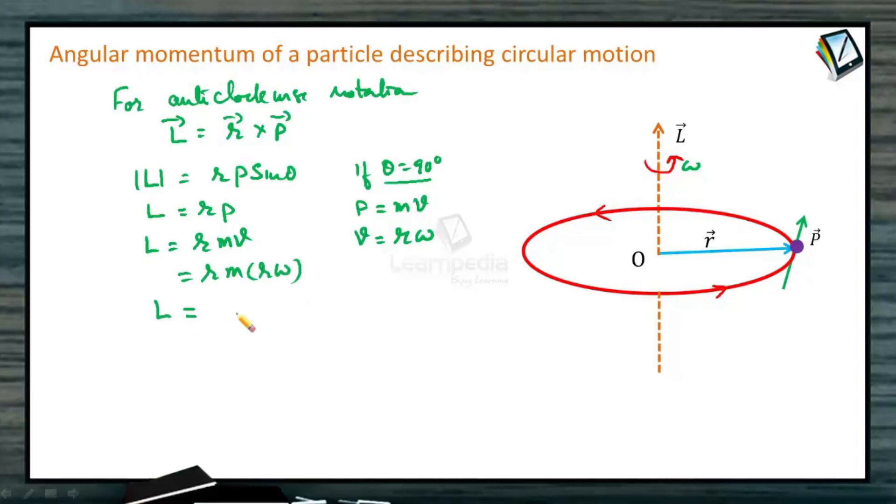Angular momentum can be written as m r square omega. Since we have only one particle here, mass of the particle is m, so m r square omega. m r square is nothing but the moment of inertia of the body or of the particle. So it can also be written as L is equal to I omega.